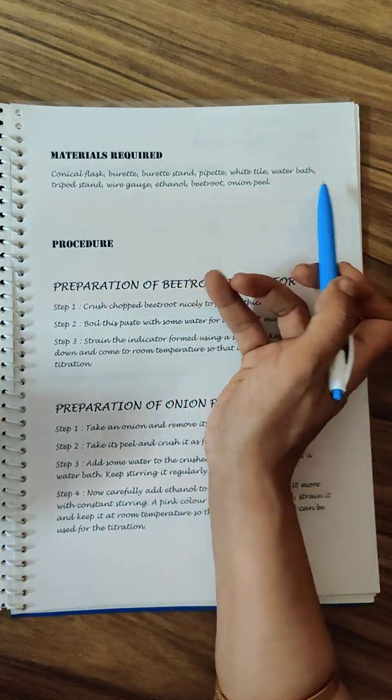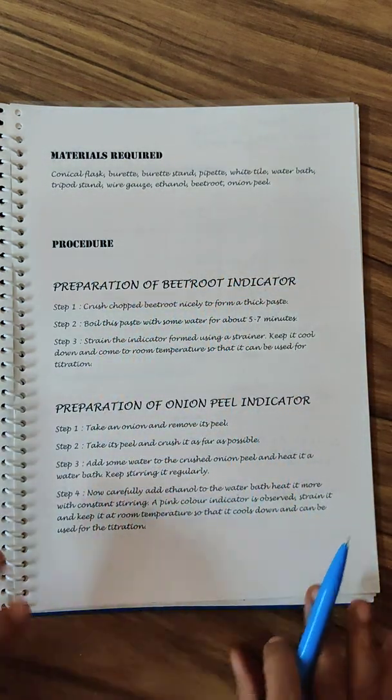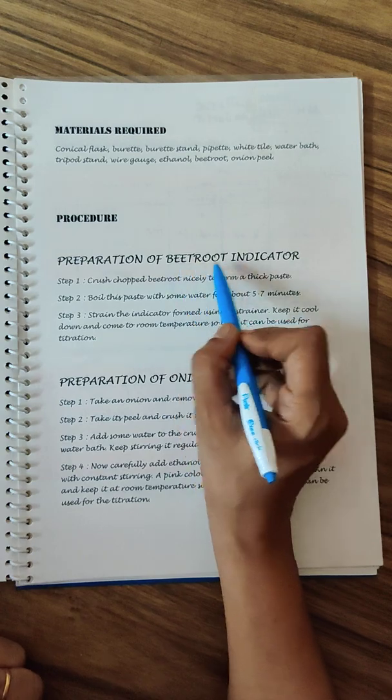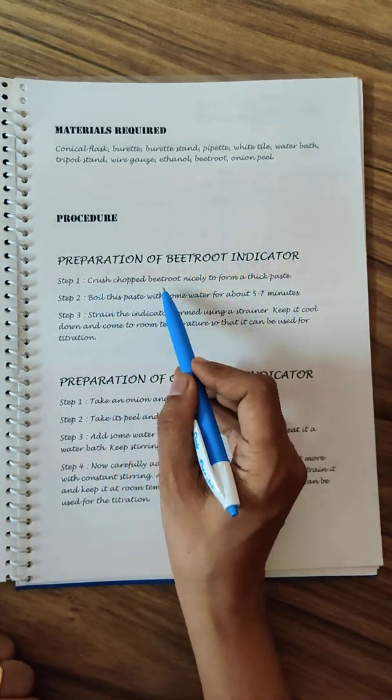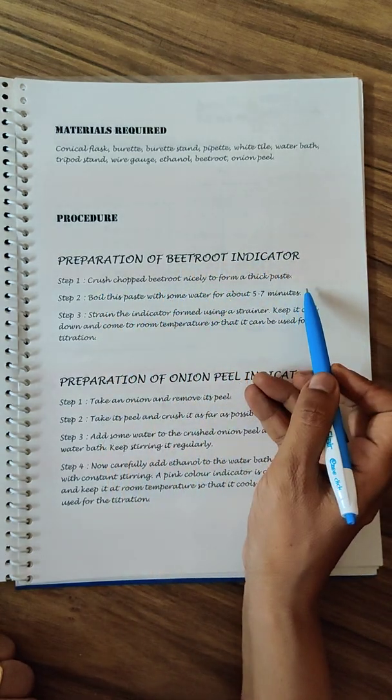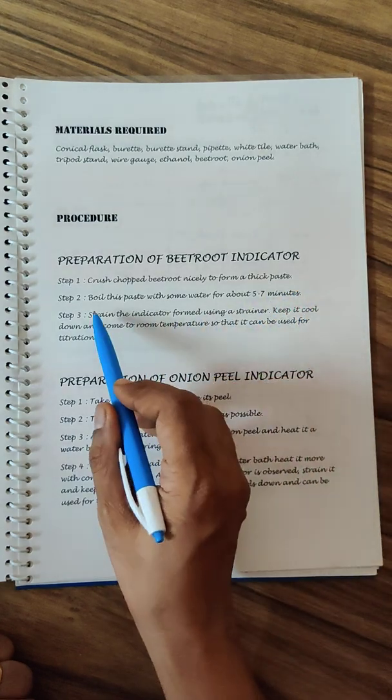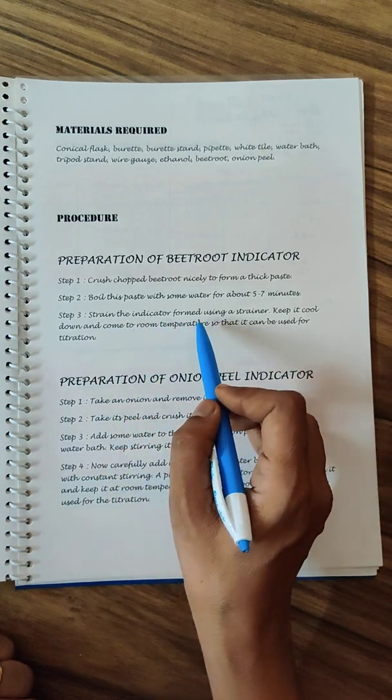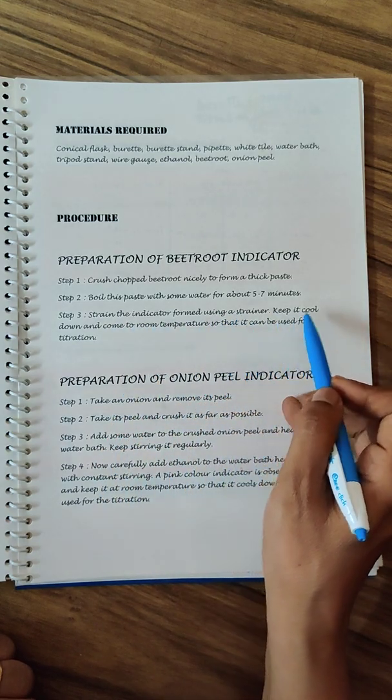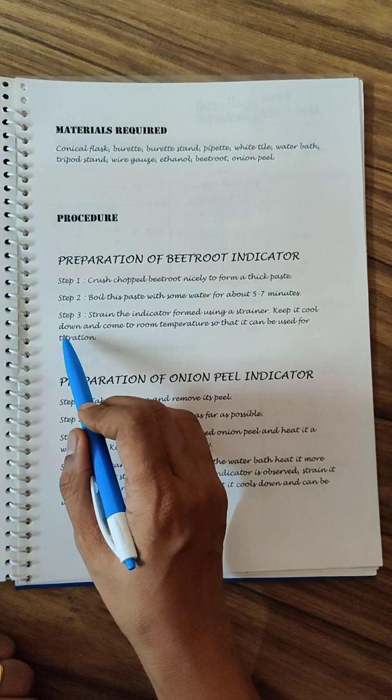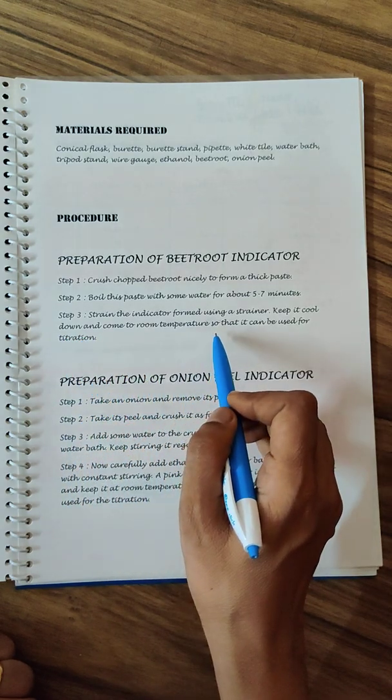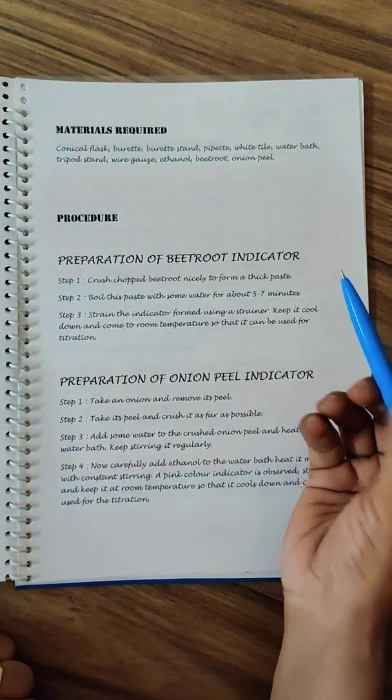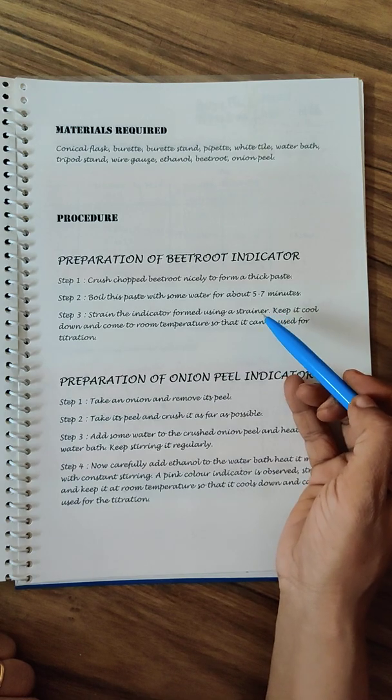The procedure - you need to prepare the two indicators. For the beetroot indicator, you need to chop the beetroot nicely in the form of a thick paste. You can use your mixie also. Boil this paste with some water for about five to seven minutes, then you need to strain it using a tea strainer at home. Keep it to cool down to room temperature so it can be used for titration. It's nothing but a filtered juice of beetroot.